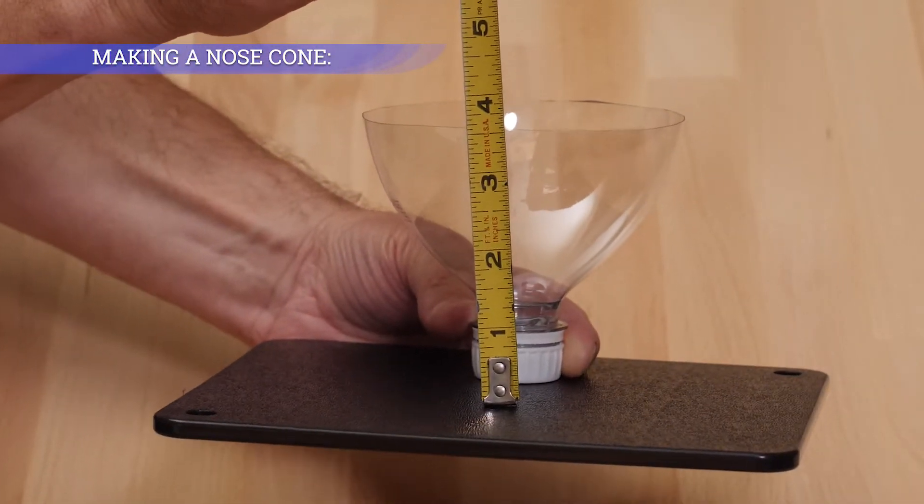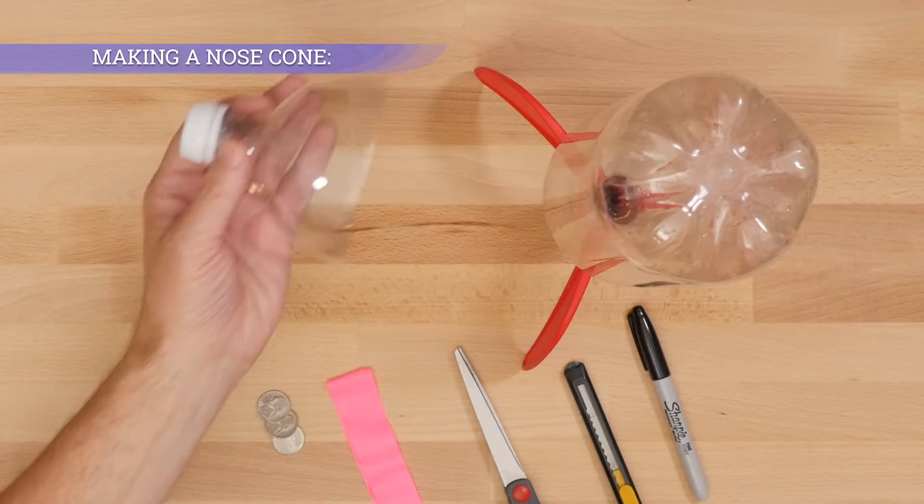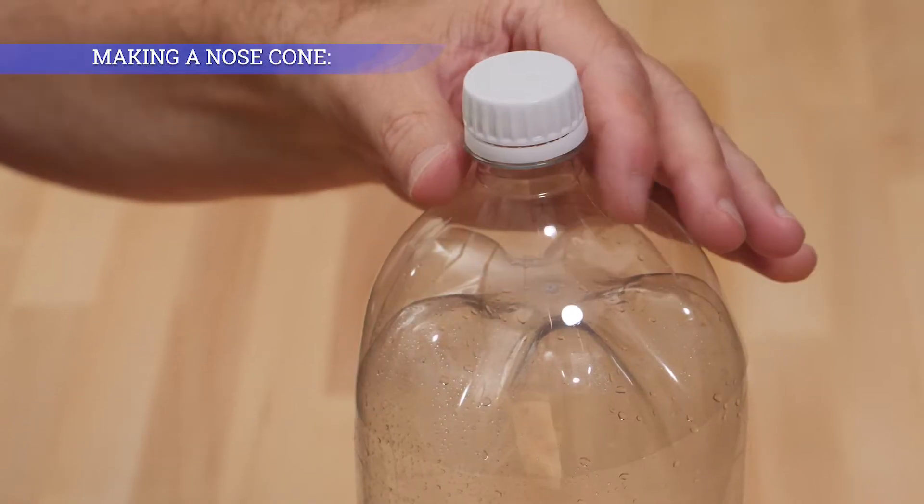Remaining nose cone height of three and a half to three-quarter inches is optimum. The nose cone should fit on top of the rocket but not get stuck.